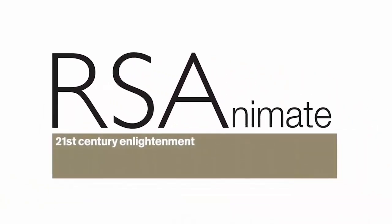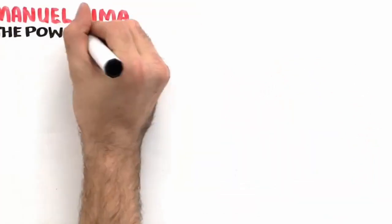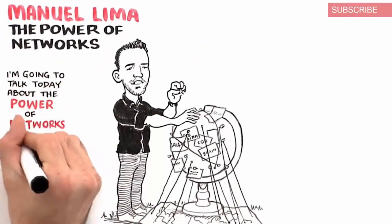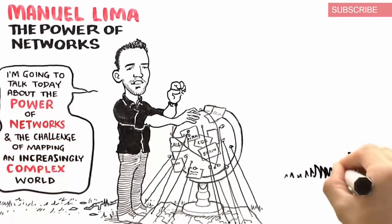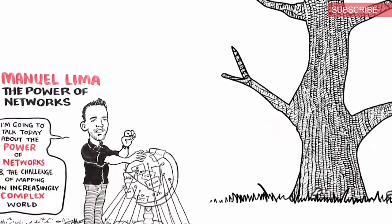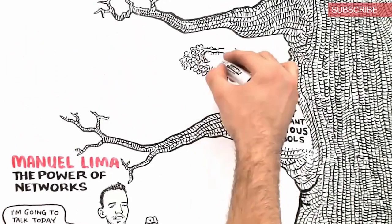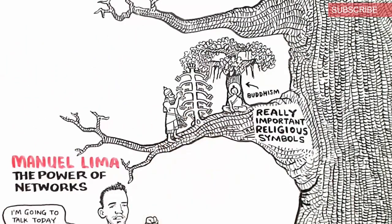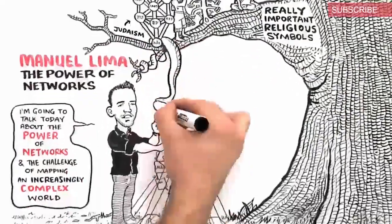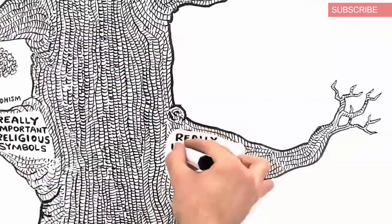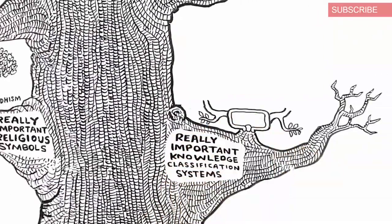Here's a lovely demonstration by Manuel de Lima, which covers this. He says he's going to talk about the power of networks and the challenge of mapping an increasingly complex world, and he starts with trees. Trees have actually been really important religious symbols over the ages — we can see trees all the way back from ancient Babylon to Judaism to Christianity.